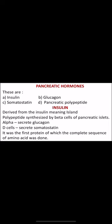Insulin is a polypeptide synthesized by beta cells of the pancreatic islets. Alpha cells secrete glucagon and delta cells secrete somatostatin. Insulin was the first protein for which the complete amino acid sequence was determined.